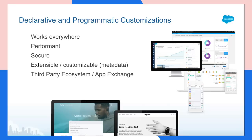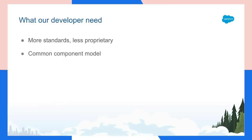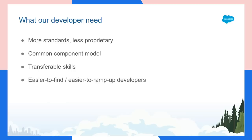So we asked our developers what they want to see in a new platform. Most of the things they wanted are around developer productivity. They want to be more effective, they want to use more standards, and they don't want to learn the Salesforce way of doing something. They already have knowledge that they want to reuse. They also want a common component model, so if they want to customize different applications in our system, they should be able to use the same process. Finding a Salesforce developer is very difficult, but finding a web developer is easier, and they want to use standard tools.